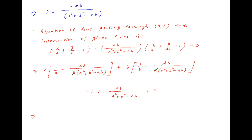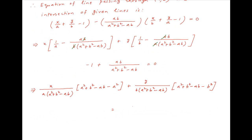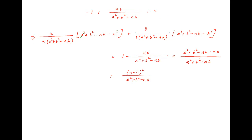This simplifies to x divided by a times a squared plus b squared minus ab, multiplied by a squared plus b squared minus ab minus a squared, plus y divided by b times a squared plus b squared minus ab, multiplied by a squared plus b squared minus ab minus b squared, is equal to 1 minus ab divided by a squared plus b squared minus ab. The right-hand side simplifies to a squared plus b squared minus ab minus ab divided by a squared plus b squared minus ab, which equals a minus b whole squared divided by a squared plus b squared minus ab.